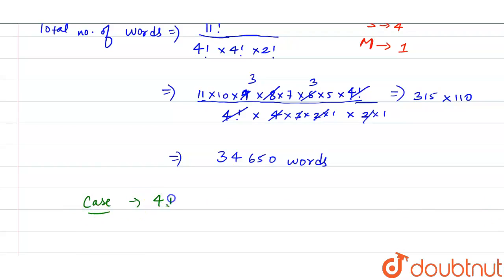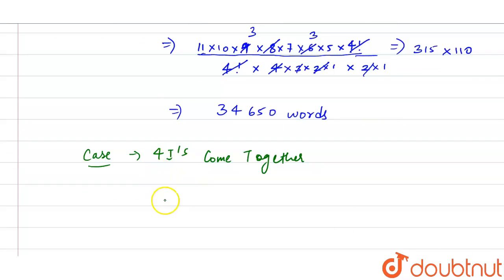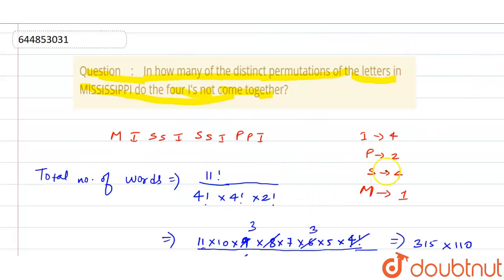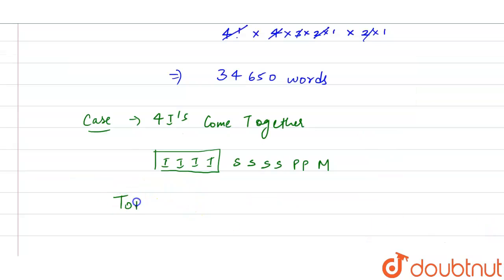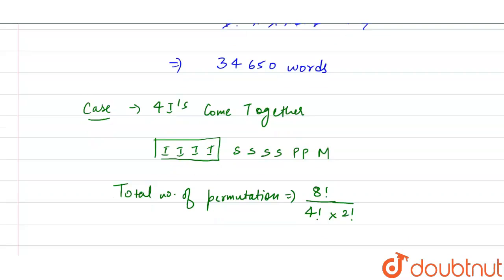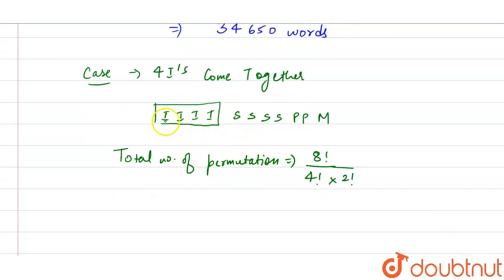If we treat the four I's as one group, the remaining letters are four S's, two P's, and one M — along with the one I-group, giving us 8 units total. The total number of arrangements in this case equals 8! divided by 4! (for the four S's) multiplied by 2! (for the two P's). We do not divide by another 4! since the four I's are treated as one group.